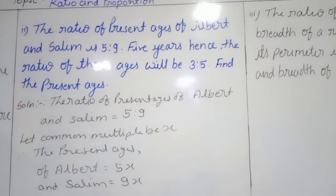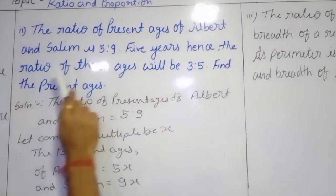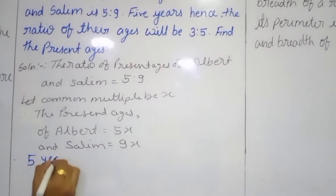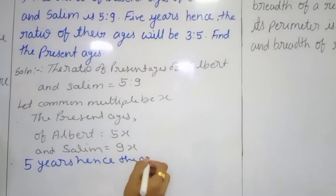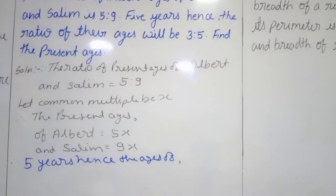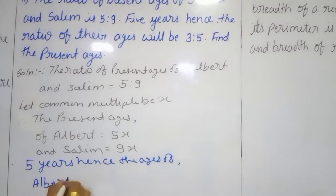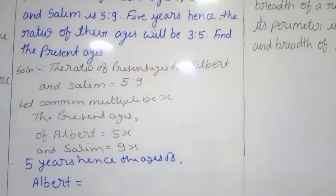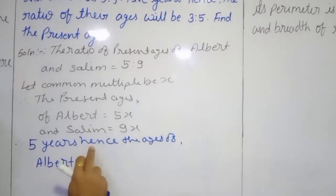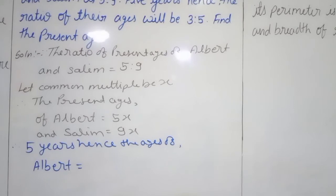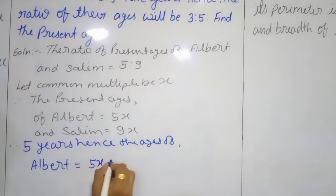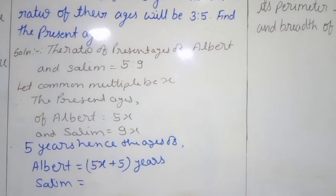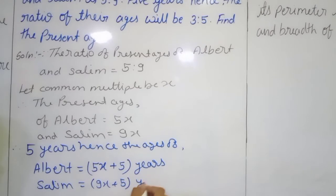Read the question once again. Five years hence, the ratio of their ages will be given. Five years hence means ahead, that is in the next 5 years. So the age of Albert 5 years hence will be 5x plus 5, and Salim's age will be 9x plus 5.